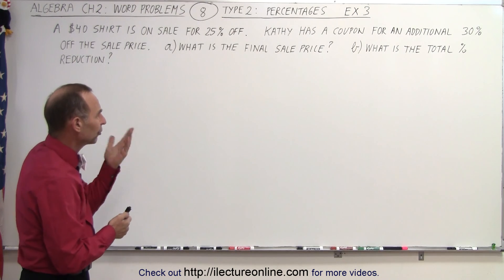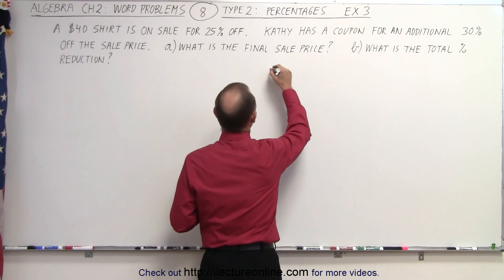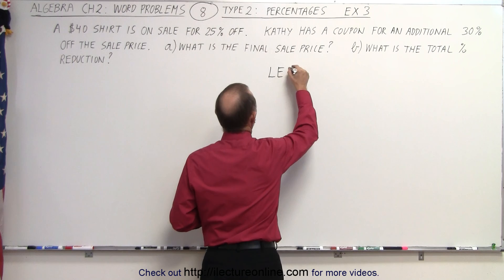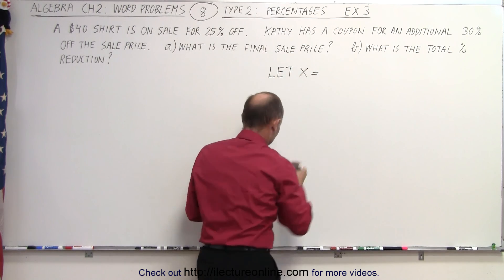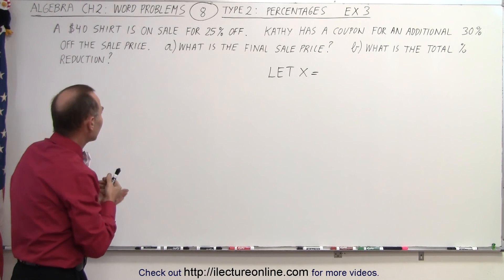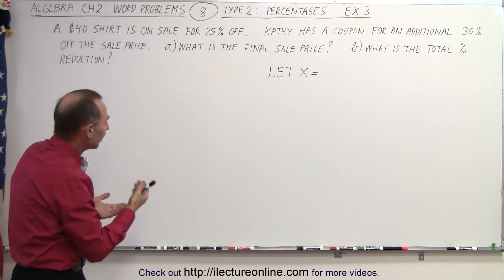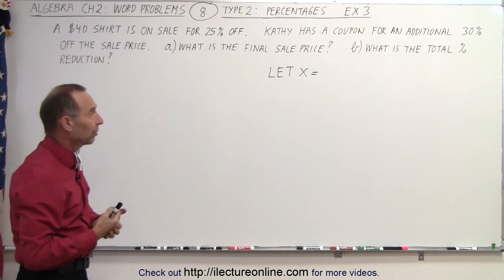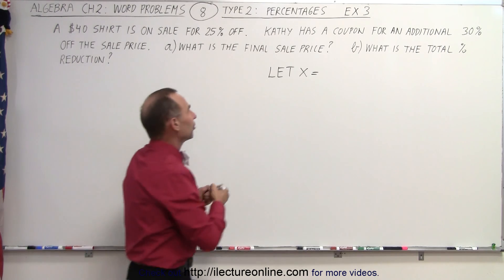Alright, we're going to start by saying let x equal something. So what should we let x equal? Well, we already know the original price. We simply don't know the sale price, the original sale price. So let x equal the original sale price.